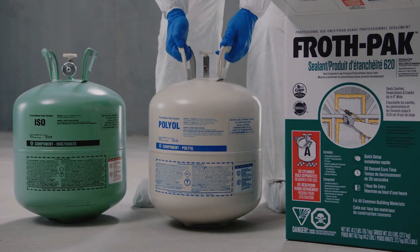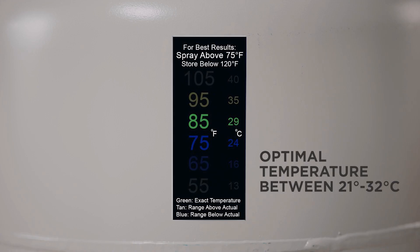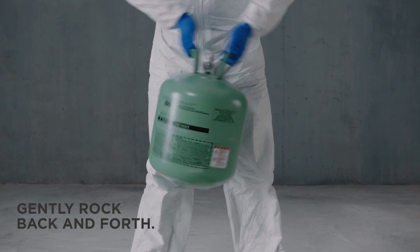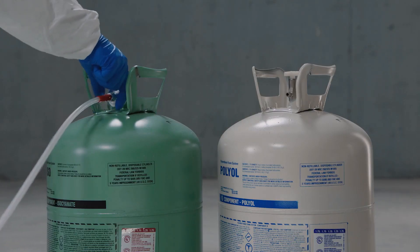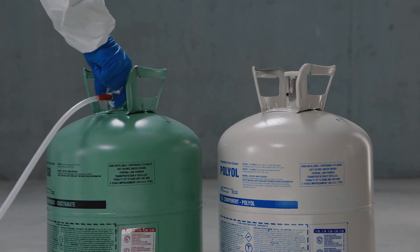Safely remove the tanks from their boxes. Next, check that the kit contents are optimally between 21 and 32 degrees Celsius, then mix the tanks. Uncoil the hose and attach the red marked hose to the A tank and attach the blue marked hose to the B tank.